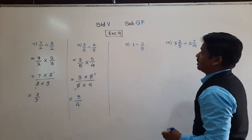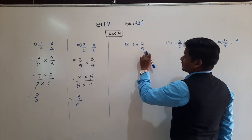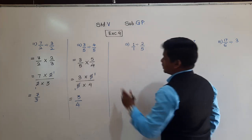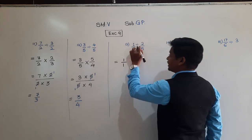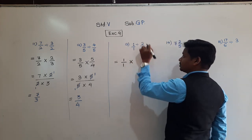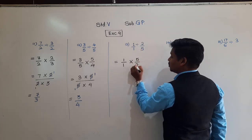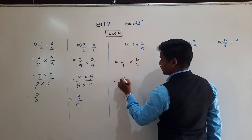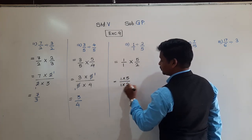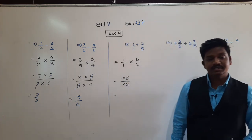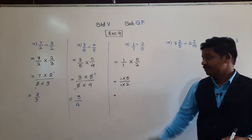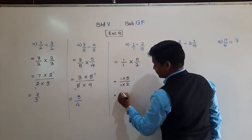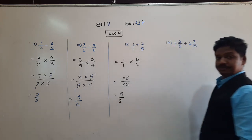Q13: 1 ÷ 2/5. The number 1 has an implied denominator of 1, so write it as 1/1. Change division to multiplication and write the reciprocal of 2/5, which is 5/2. So: 1/1 × 5/2. The only common factor is 1, so multiply directly: 1 × 5 = 5 and 1 × 2 = 2. Answer: 5/2.